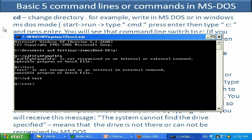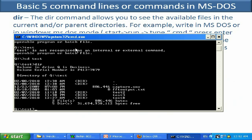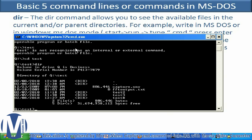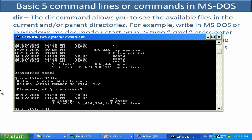Now let's discuss the DIR command. DIR shows you what files, folders, and subfolders are inside the current folder. It gives you information about the creation date, size, and full file names with extensions, as well as how many bytes are free on the disk. For example, typing CD test3 and pressing Enter takes us into test3, and then running DIR shows us there are zero files in that folder.